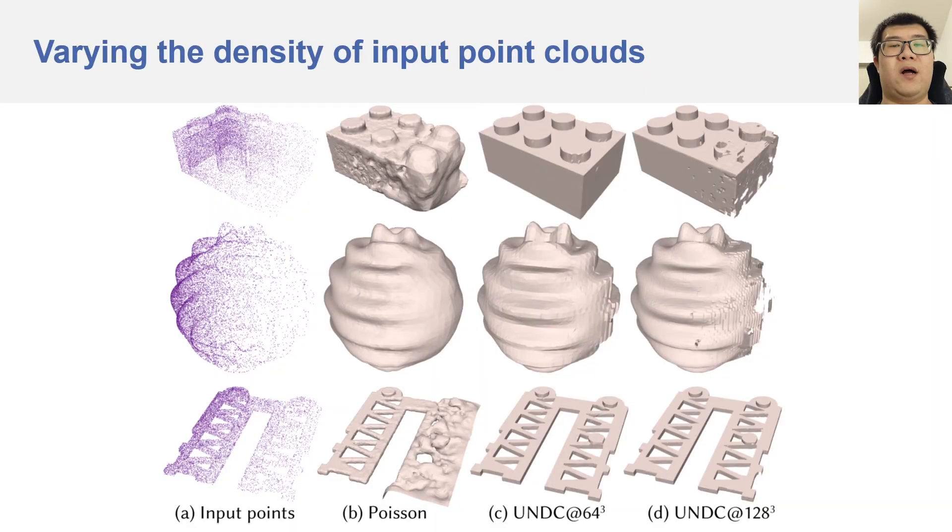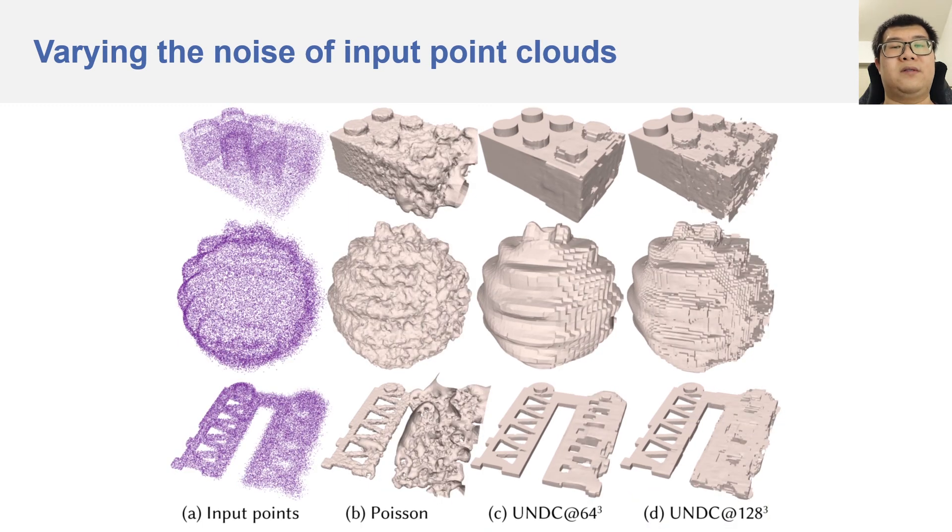Here the input point clouds have density variations within the same shape. We show the results of our method when the output grid size is 64 cubed or 128 cubed. Here the input point clouds have noise variations within the same shape. In both density and noise variations, our method is more robust.